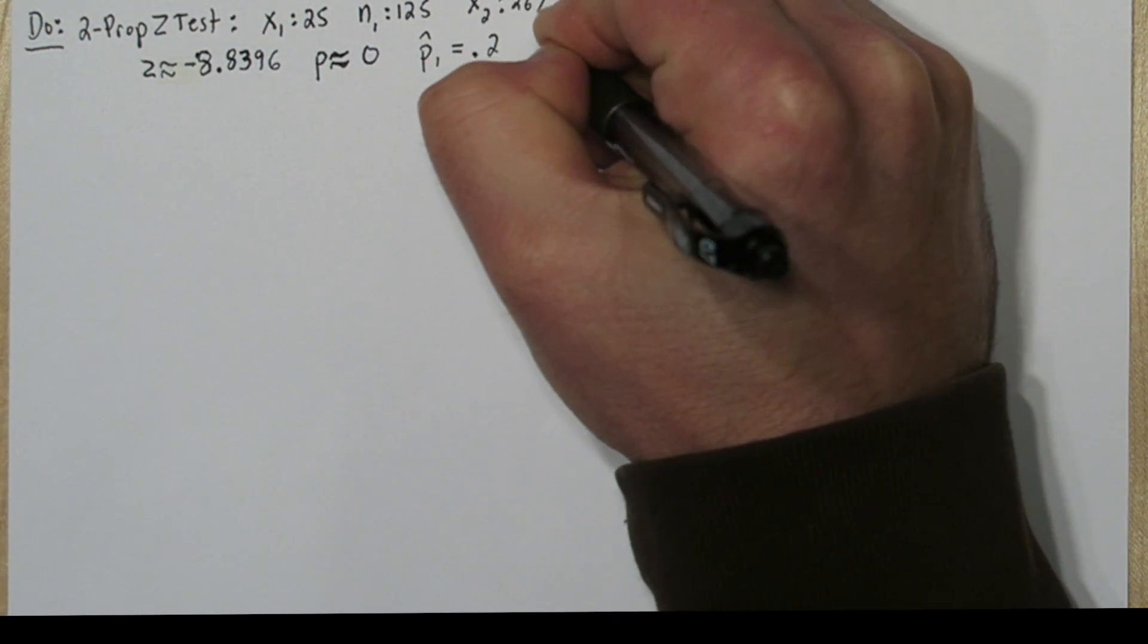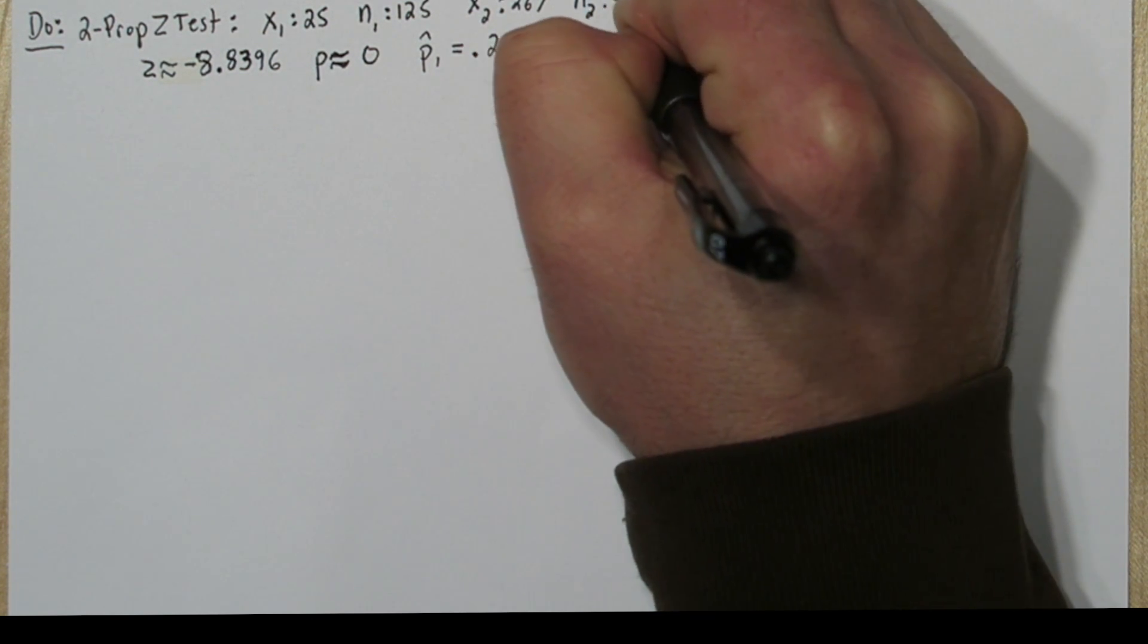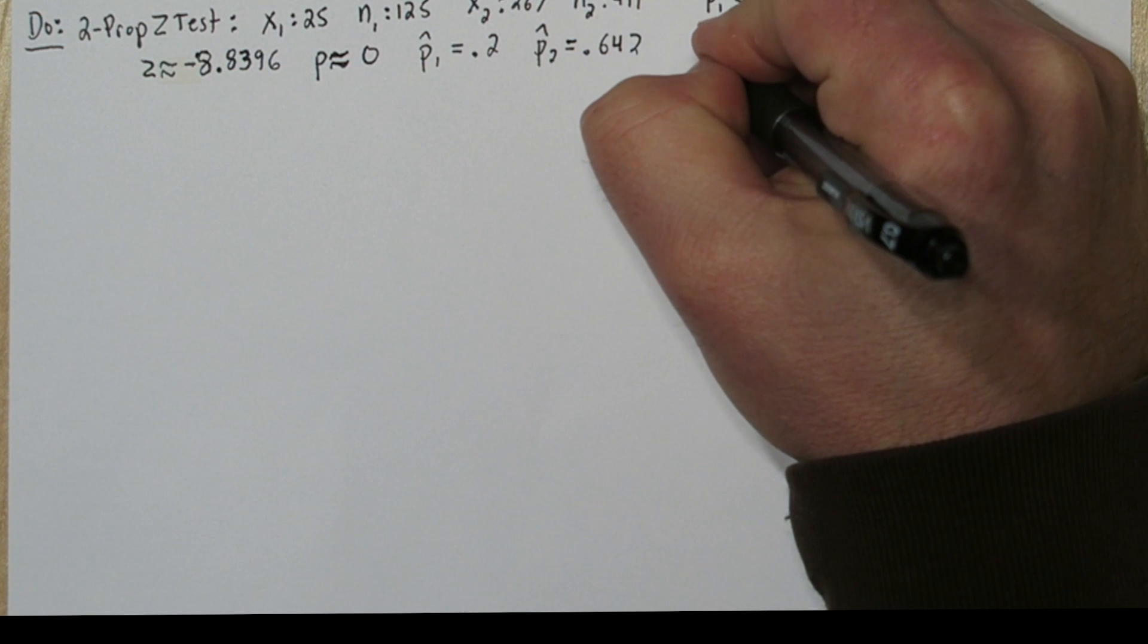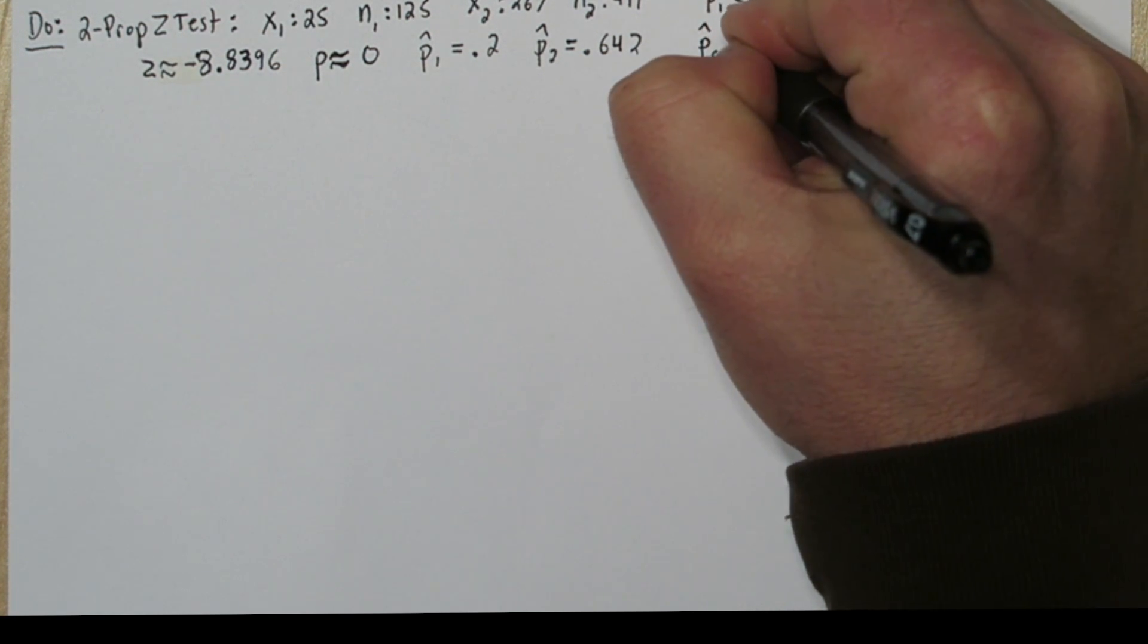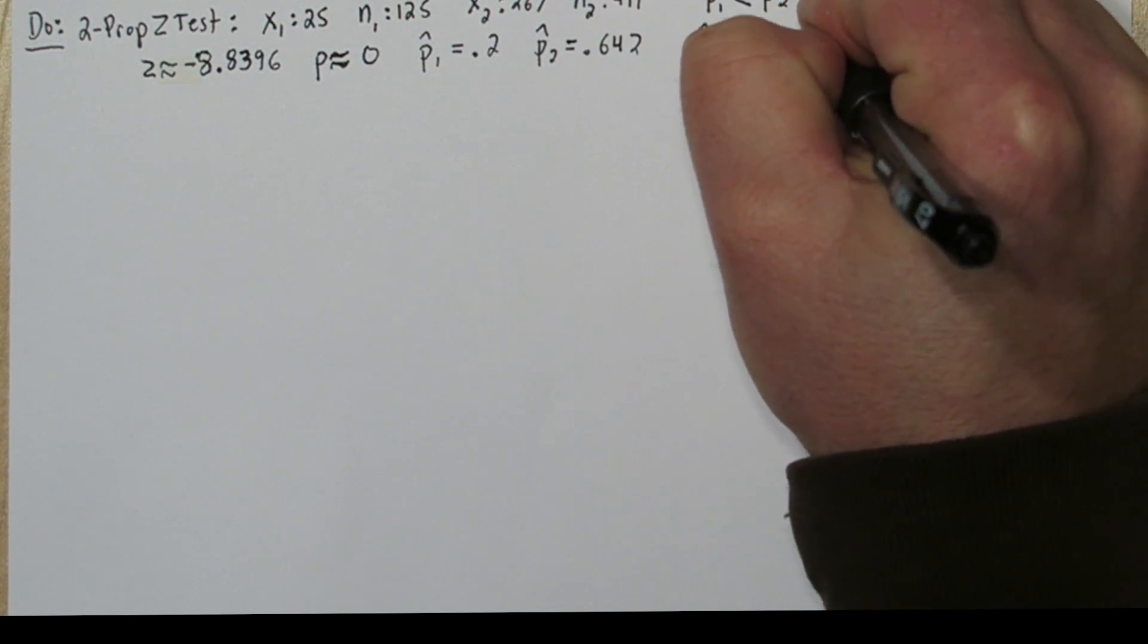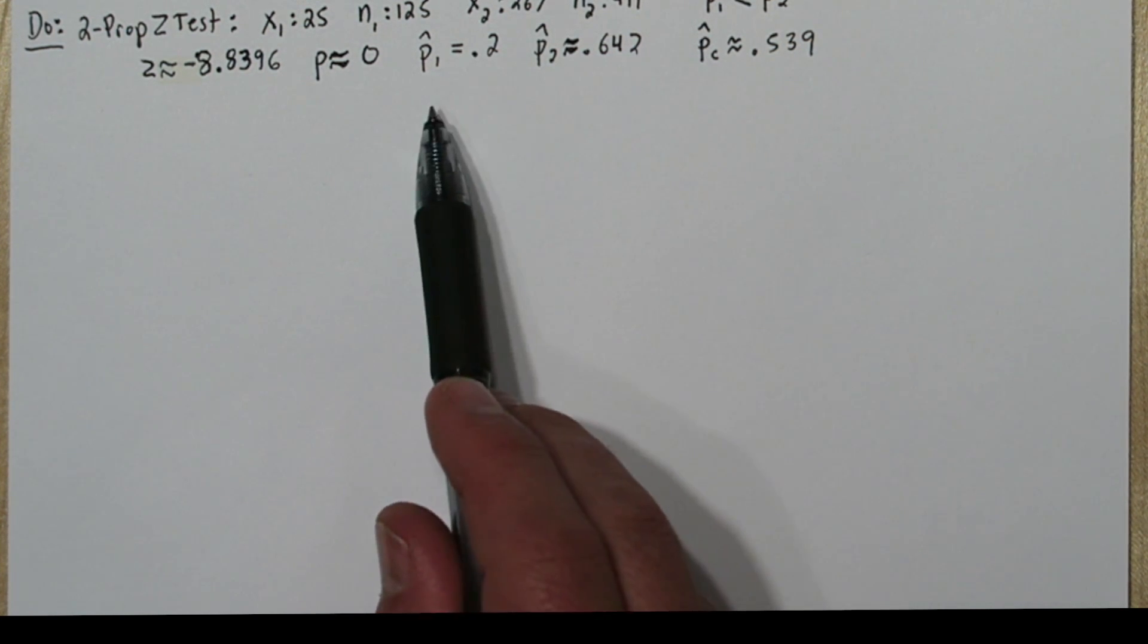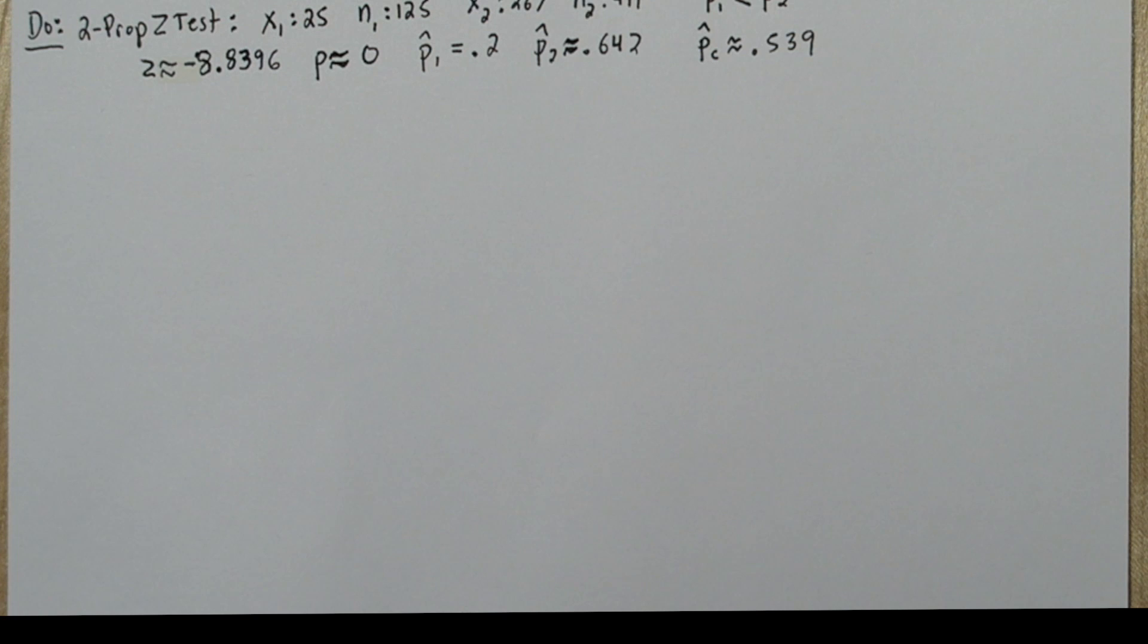Now in our results, it gave us p-hat sub-1 and p-hat sub-2. P-hat sub-1 is the sample proportion of tree-mounted bat houses that were occupied, which turned out to be 0.2. P-hat sub-2 was the sample proportion of building-mounted bat houses that were occupied, which was about 0.642. So the difference between these two proportions is fairly substantial. That's why we ended up with such a high test statistic and a p-value very close to 0.